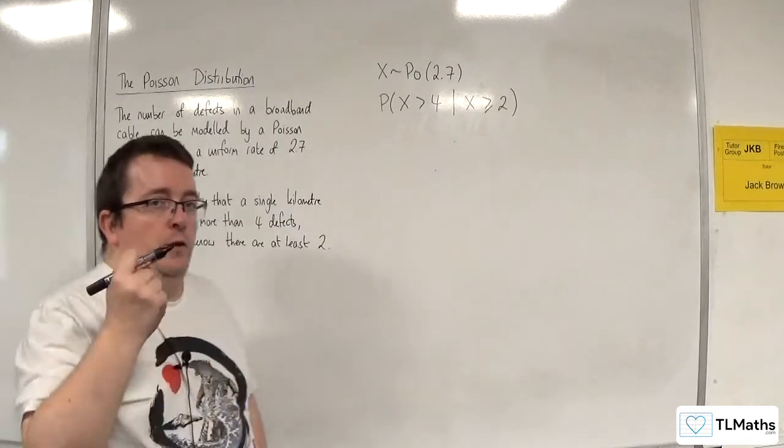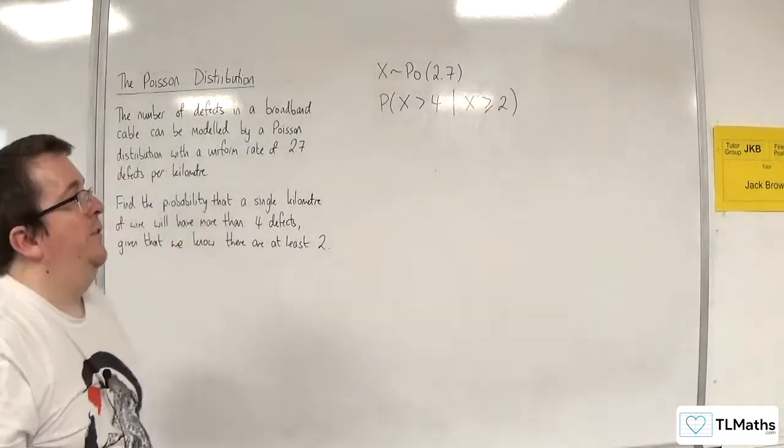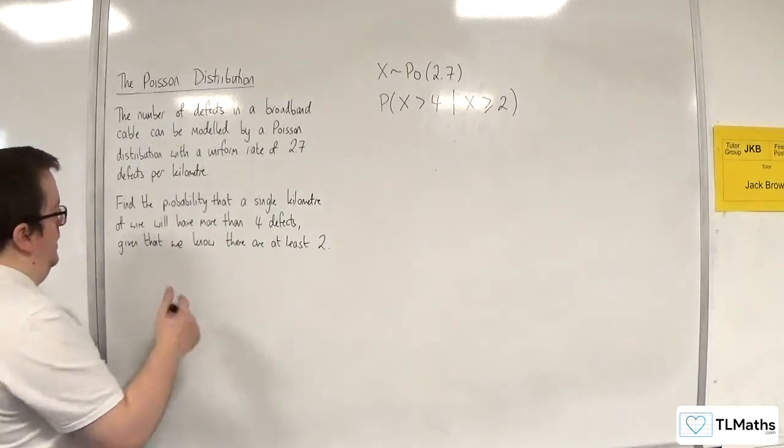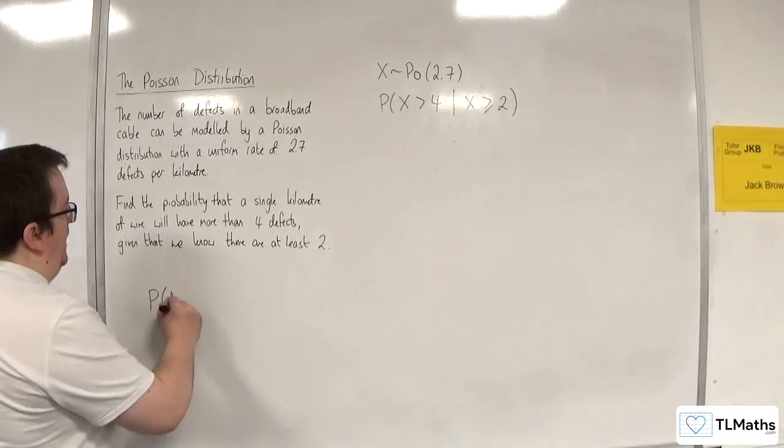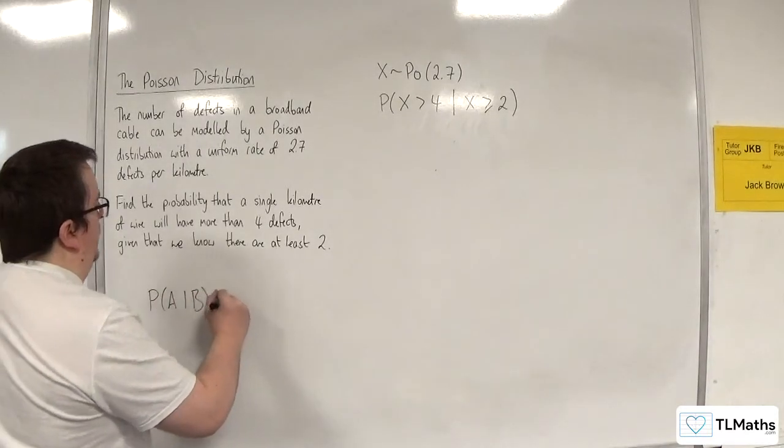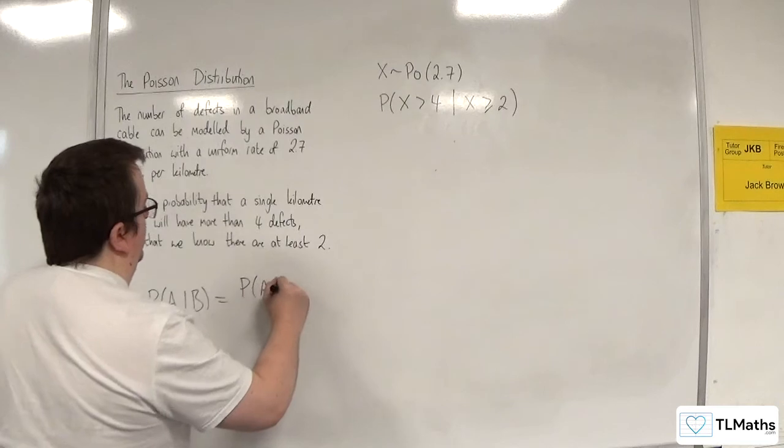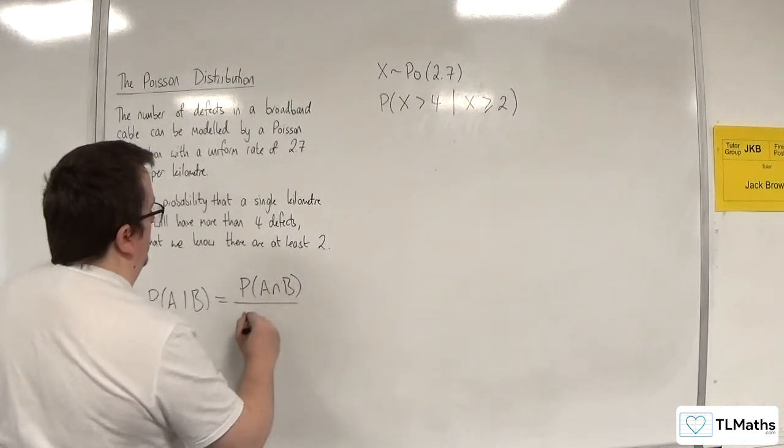Okay, so in order to do this, this is a conditional probability problem. Now I'm going to use the formula of probability of A given B. It's equal to the probability of A intersection B divided by the probability of B.